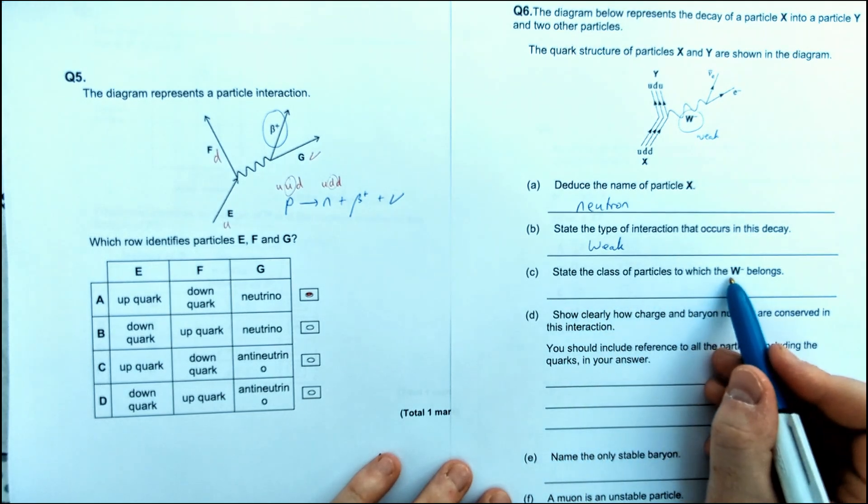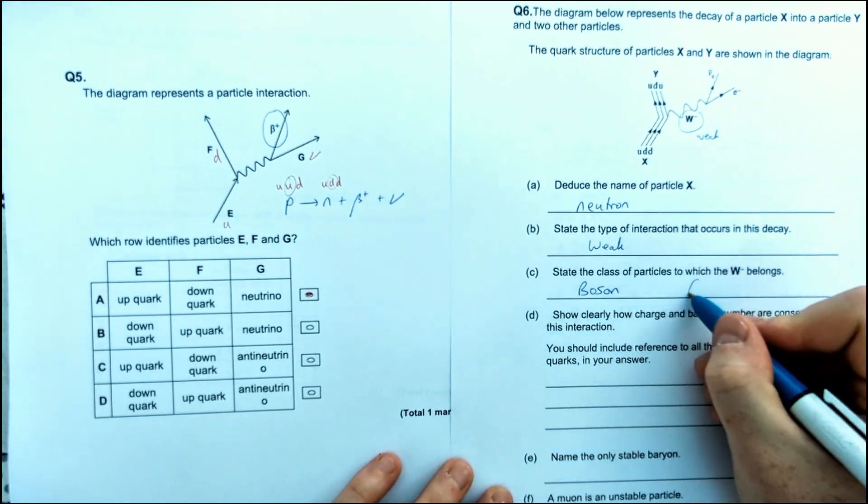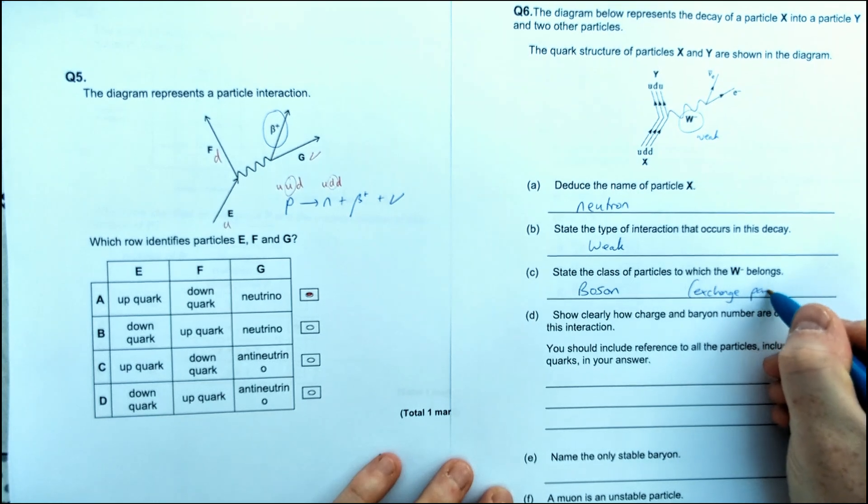Next one, the class of particles to which a W- belongs is a boson. So one of those exchange particles, but you'd have to say boson here, I think, for the mark.